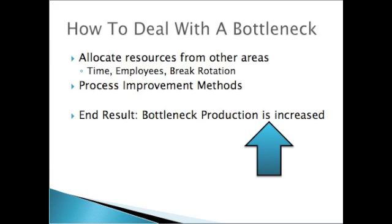A good way to deal with a bottleneck is process improvements — this is where process engineers make their money. Ways they can improve the process to reduce the time it takes to make a part. A reduction in time means you can get more parts in the same amount of time, so you're increasing output and breaking the bottleneck. You're improving production and reducing the constraint in your system, so the end result is that your bottleneck production is increased.